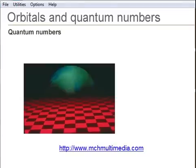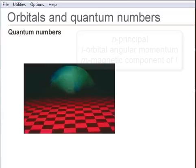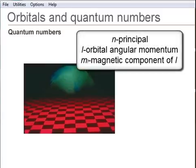Quantum numbers arise naturally in quantum mechanics. The exact solution for hydrogen atoms gives three quantum numbers: N, the principal quantum number